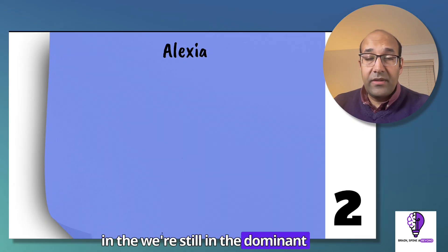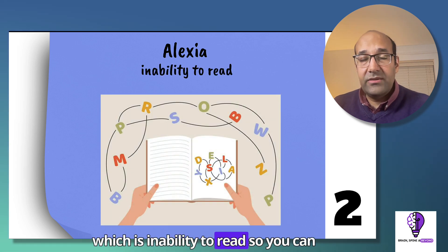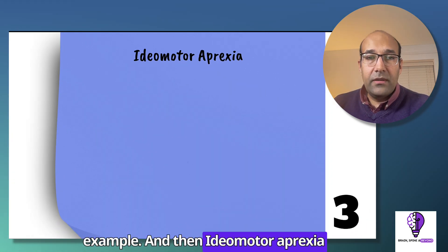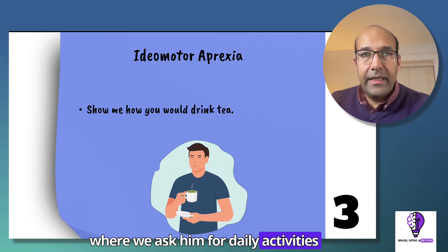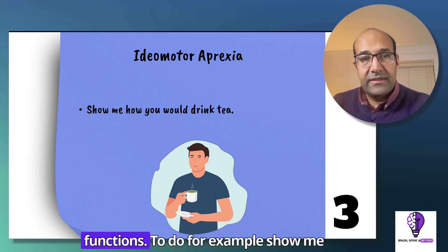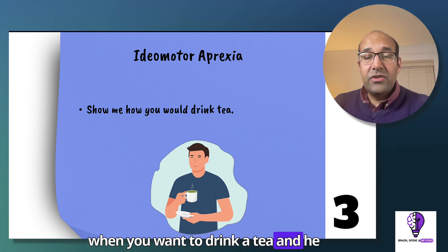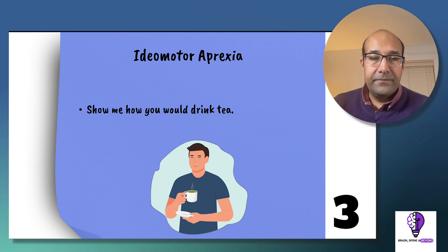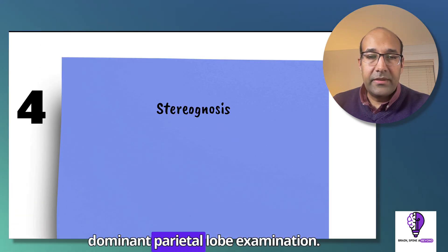Still in the dominant hemisphere, we talk about alexia — inability to read — so you can ask him to read your name tag, for example. Then ideomotor apraxia, where we ask him to perform daily activities requiring a sequence of motor functions, for example: 'Show me how you drink tea,' and he should use his hand as if drinking tea. This is ideomotor apraxia in dominant parietal lobe examination.